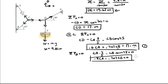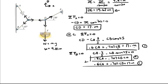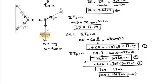Rewriting Equation 1: 0.6 CA plus 0.707 CB equals 17 times the mass. Adding Equation 1 and Equation 2 together: 0.8 plus 0.6 gives 1.4 CA, and negative 0.707 plus 0.707 cancels out, leaving 1.4 CA equals 17 times the mass. Solving for CA gives CA equals 12.14 times the mass. Plugging this into Equation 2, CB equals 13.74 times the mass.